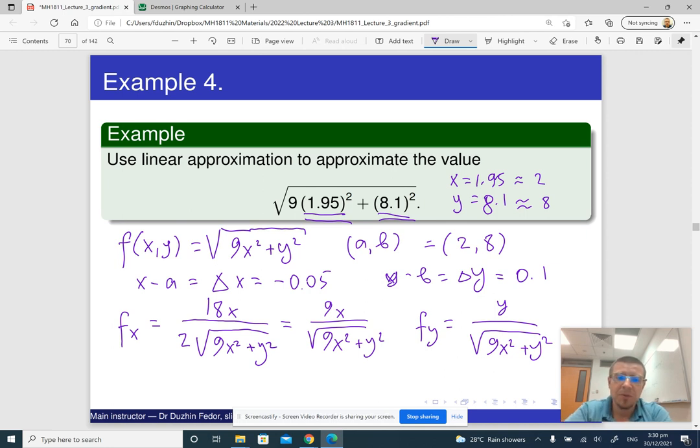So I've just derived f_x and f_y. Besides, we need to compute the values. So f of a, b is going to be square root of, so my a is two and my b is eight. So it's going to be nine times two squared, so nine times four, plus eight squared is 64. Square root of nine times four, this equals 36 plus 64, this is 100, so square root of it is 10. So this is just 10.